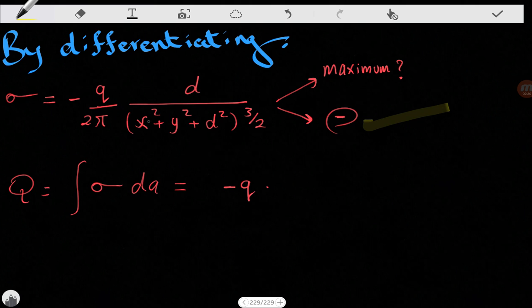Because when x here and y are equal to zero, then we get a higher signal. Okay, we can also calculate the charge, which is Q, by integrating this quantity.